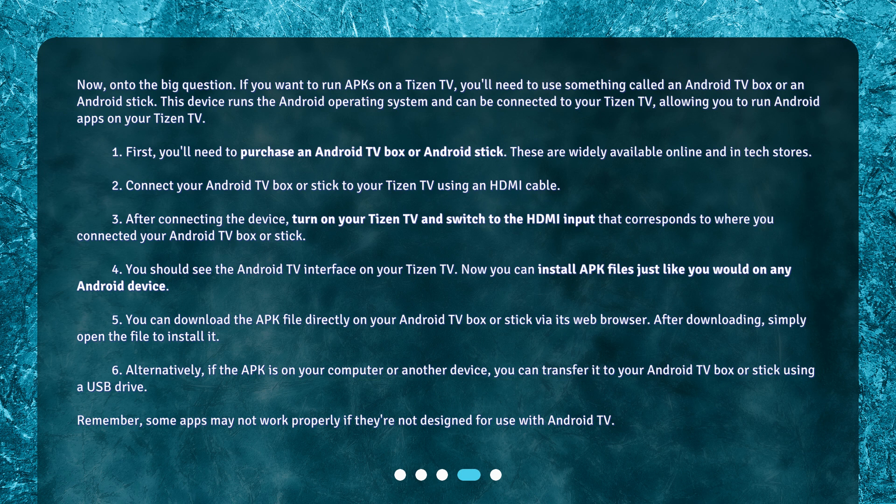Step 1: First, you'll need to purchase an Android TV box or Android stick. These are widely available online and in tech stores. Step 2: Connect your Android TV box or stick to your Tizen TV using an HDMI cable.